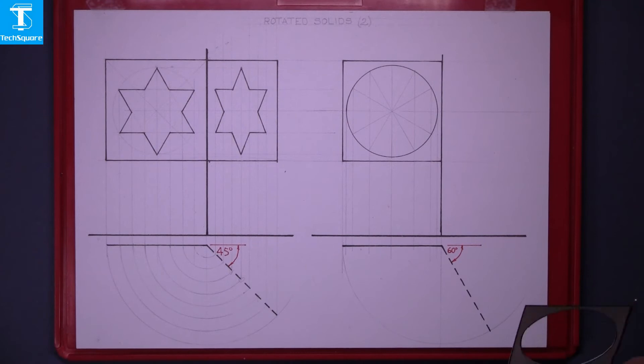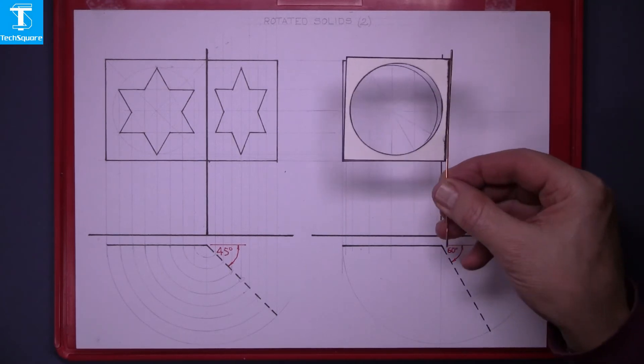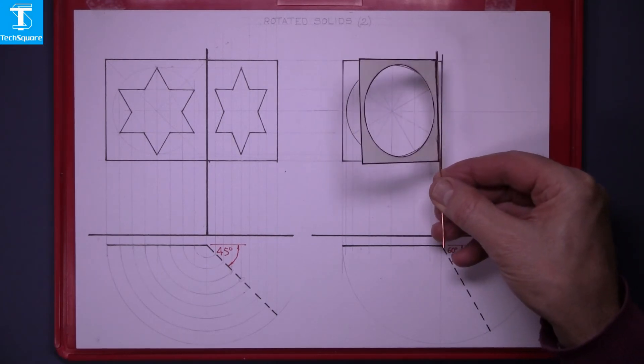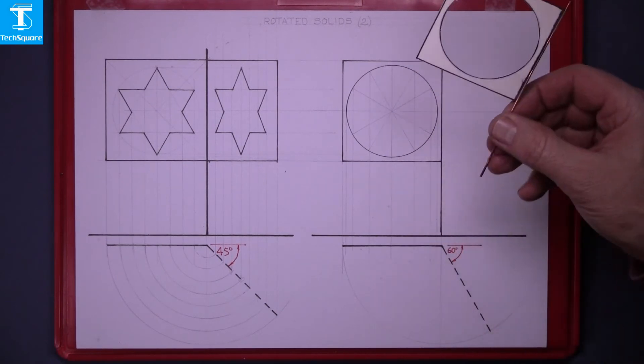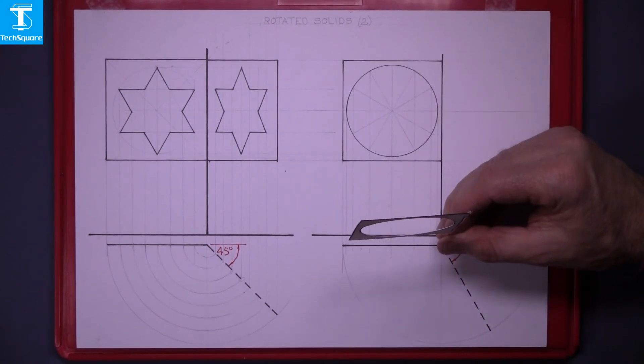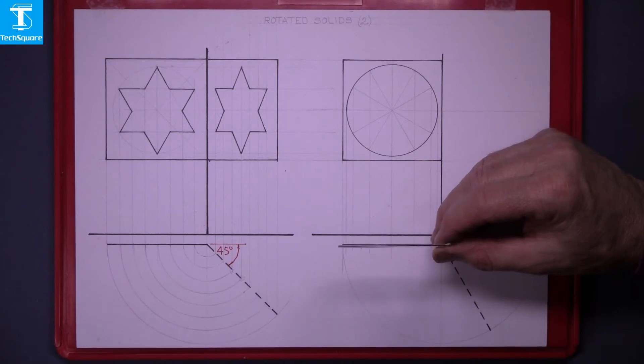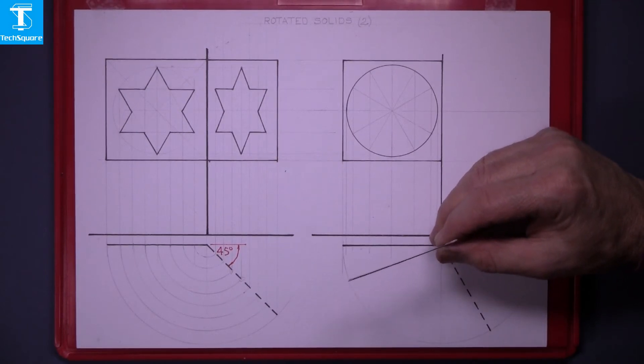Now the next question, you're given this sign which rotates like that. The plan of it, again, looking directly down on it, is just a line. And as it rotates again, it follows the circle until it gets to the dotted line.